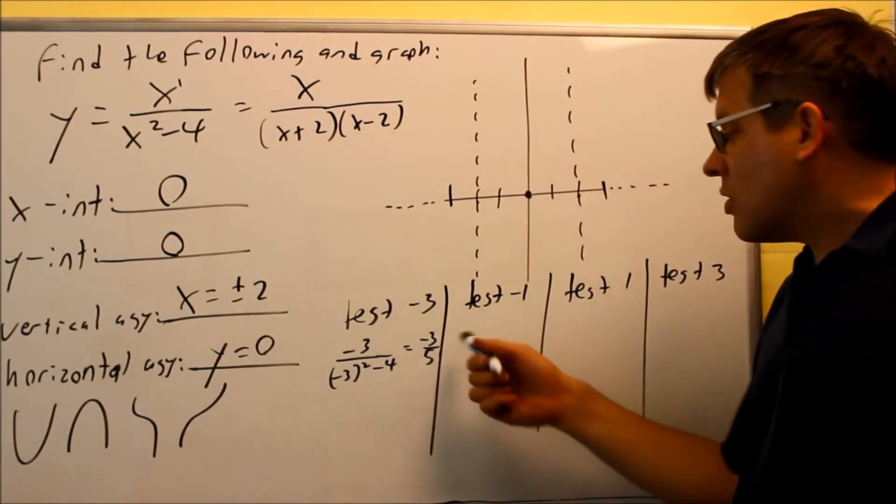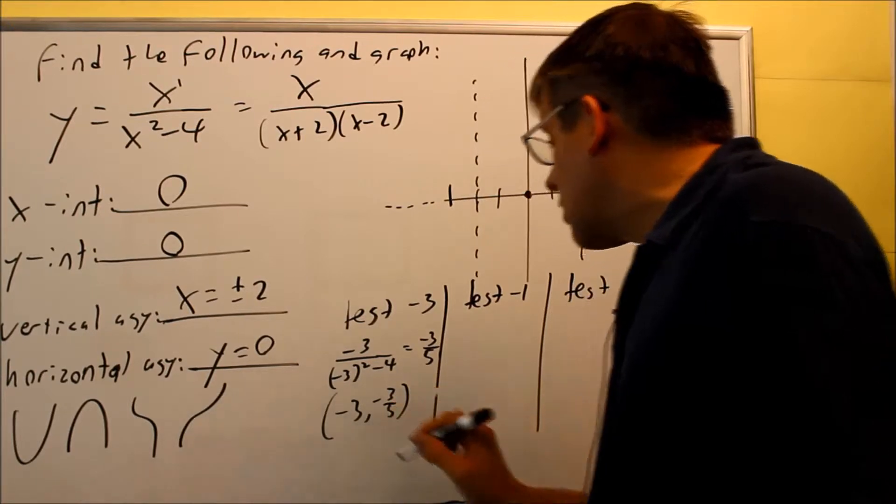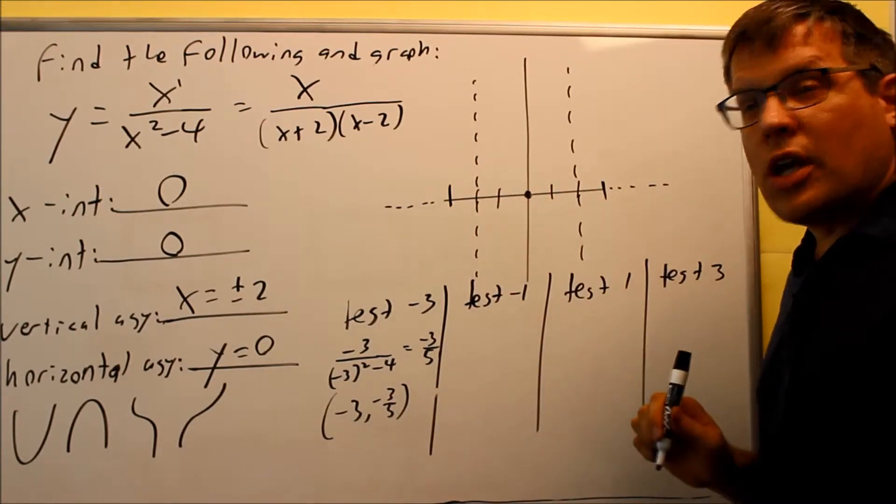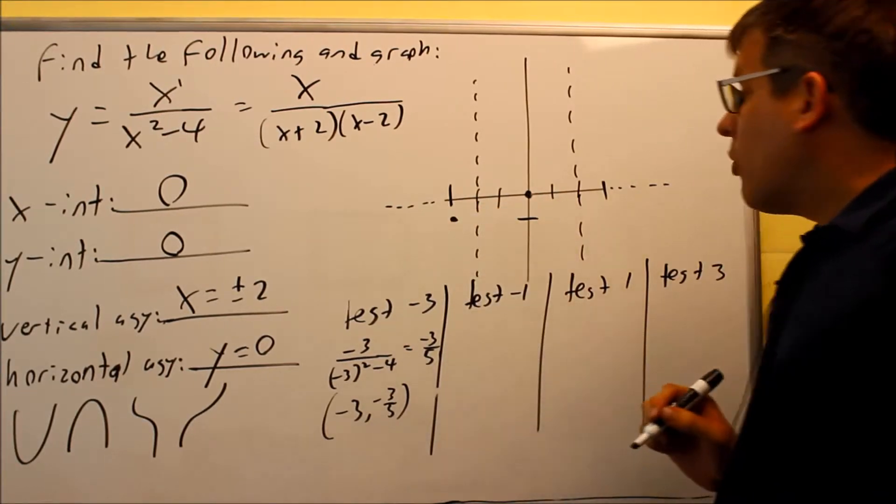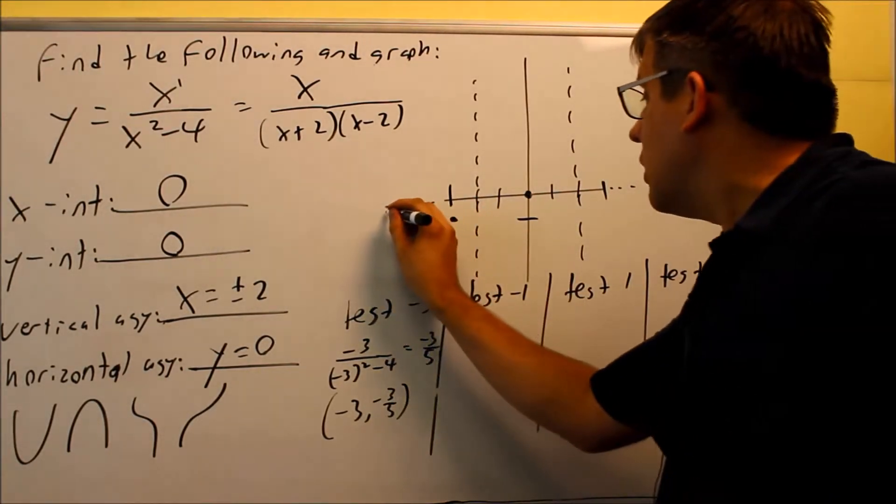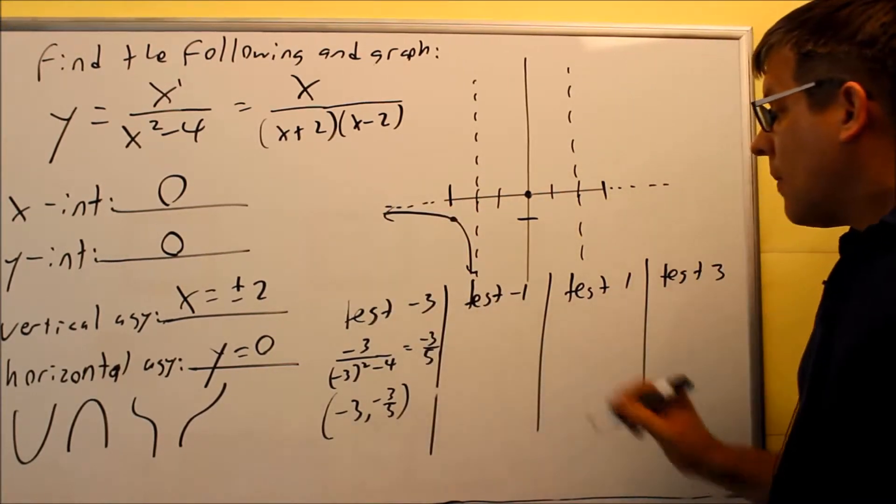So negative 3 fifths is the y value, so therefore negative 3 and negative 3 fifths is the actual point that's going to be on here. Negative 3 and negative 3 fifths is going to be this dot right there, so that tells me that this graph is going to begin by going down like this.